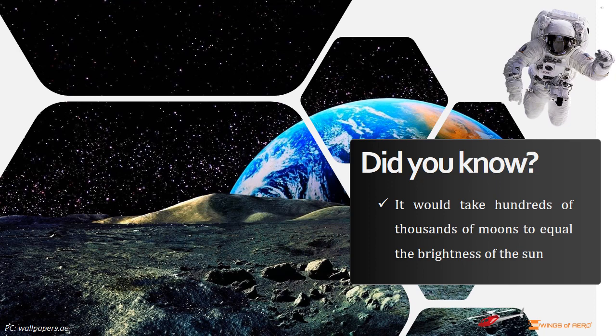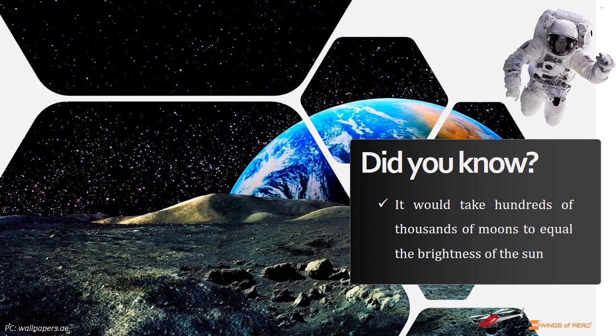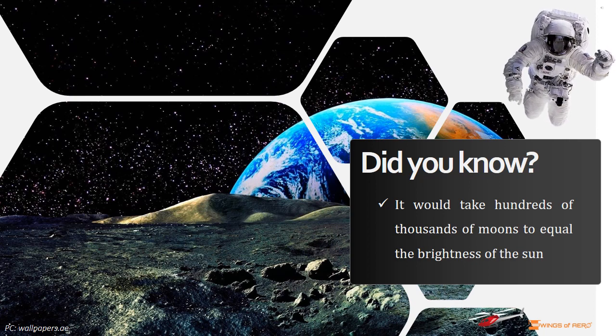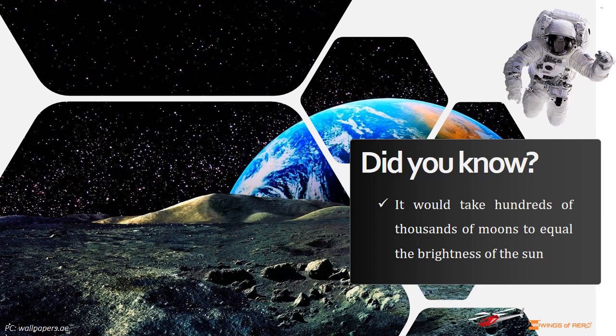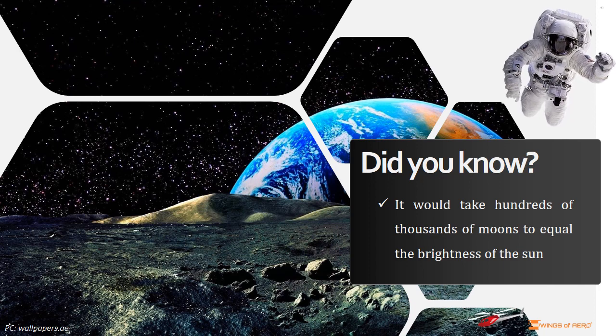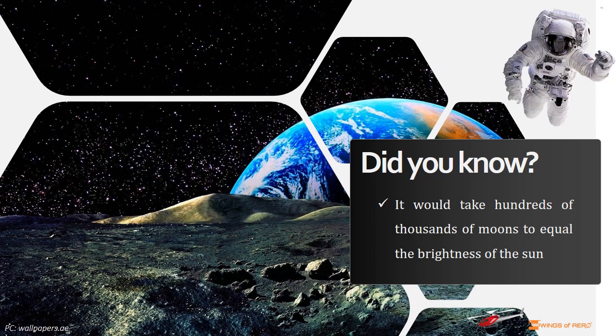Did you know, it would take hundreds of thousands of moons to equal the brightness of the sun. The full moon shines with a magnitude of minus 12.7 but the sun is 14 magnitudes brighter at minus 26.7. The ratio of brightness of the sun versus the moon amounts to a difference of 398,110 to 1. So that's how many full moons you would need to equal the brightness of the sun.